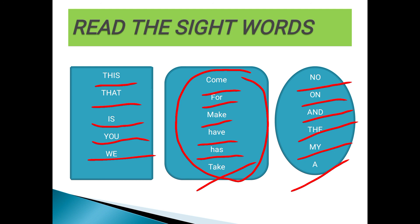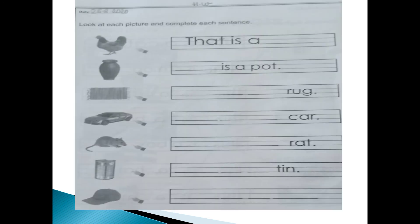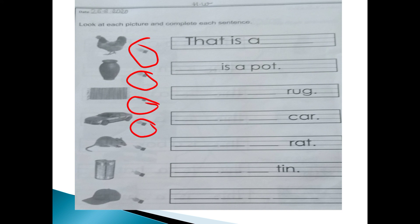Now students, I am using a pointer for you so that you can understand well. I have already told you about 'this' and 'that'. The arrow sign — the hand arrow — tells us that all these things are far from us. This page will be your homework page in your spiral — page number 106.